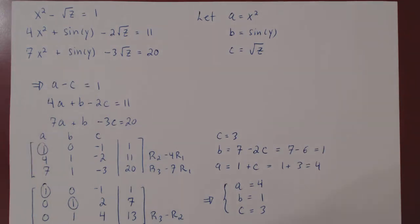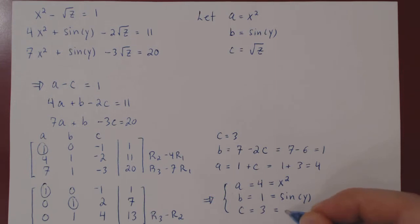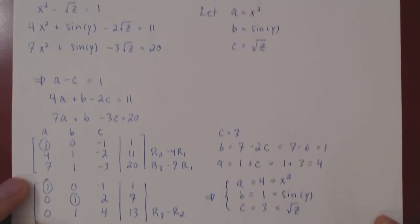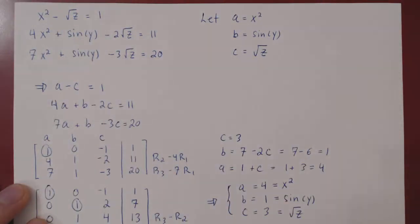Okay, well, a was x squared, b was sine of y, and c was root of z. And let's now see if we can solve for x, y, and z, and find all solutions to the original non-linear system.